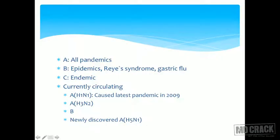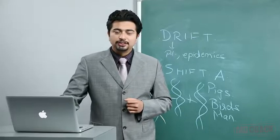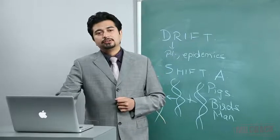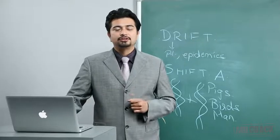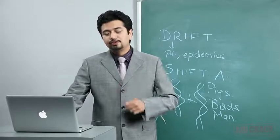Regarding currently circulating viruses, we need to remember the important ones. Currently we have H1N1, H3N2, B, and the newly discovered H5N1. H5N1 made global headlines very recently. As for H1N1, the latest pandemic of influenza is of the A variety — H1N1 caused the most recent global pandemic.